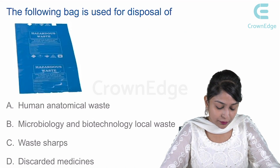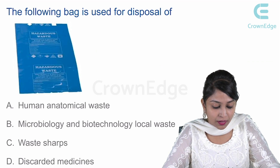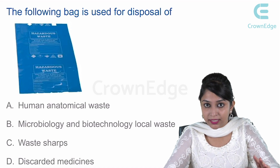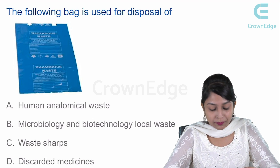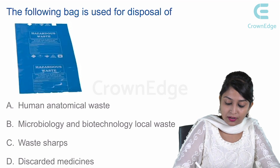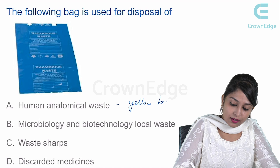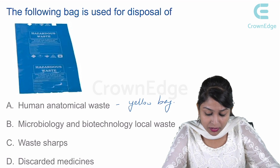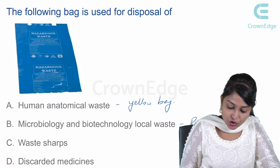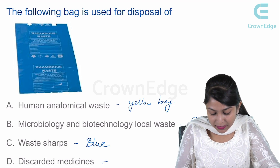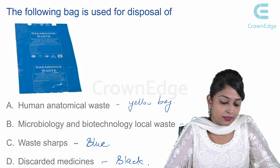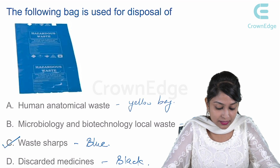The next MCQ asks which bag is used for disposal of a particular waste. You need to recollect the different color codings for waste disposal bags. Human anatomical waste is disposed in a yellow bag. Microbiology and biotechnology waste goes in red bags. Waste sharps are disposed in blue bags, and discarded medicines go in black bags. Since the question asks about a blue bag, the right answer is option C: waste sharps.